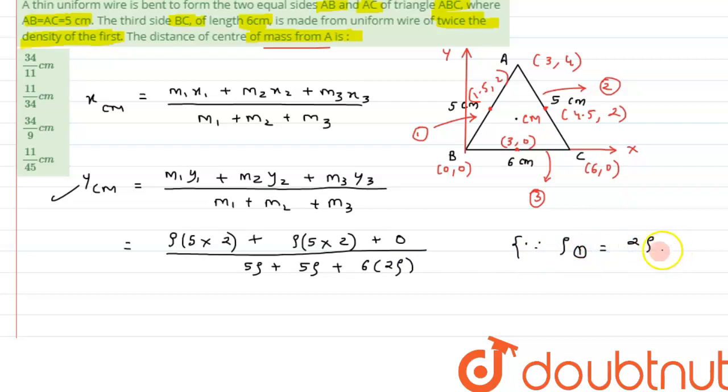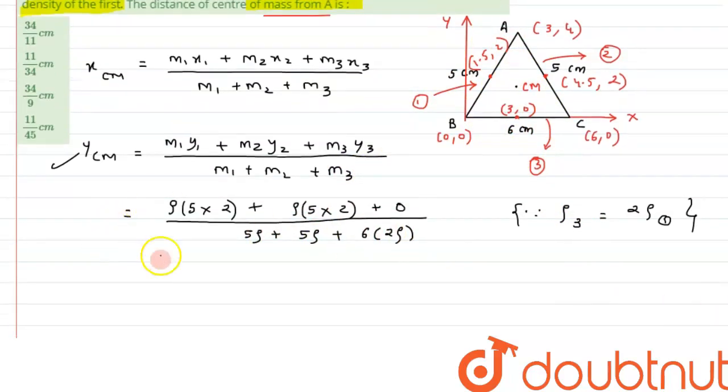So density of third we can say is first and second both the densities are same so we can write third that is BC density of BC is twice the density of AB or AC we can say so we have substituted the value and from here we can calculate it as 10 rho plus 10 rho that comes out to be.